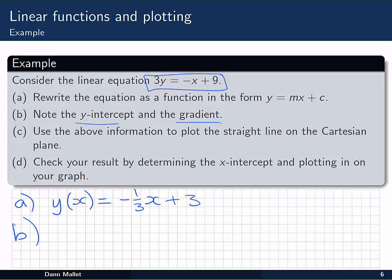From that we can see the y intercept and the gradient. The gradient is just that coefficient of x there, -1/3. And the y intercept, that's going to be the y value when x is equal to 0. When x is 0, y is equal to 3. So we've got that coordinate there, (0,3).